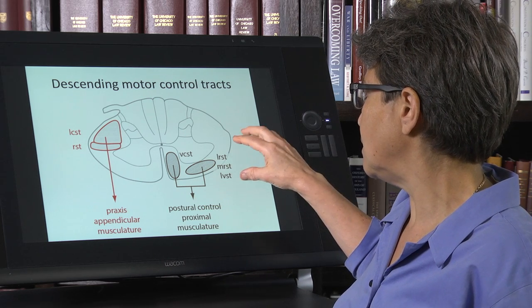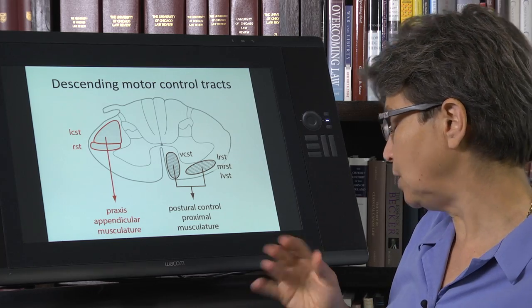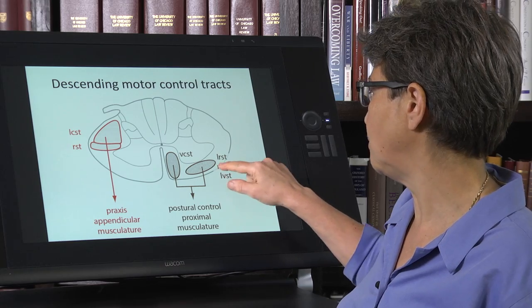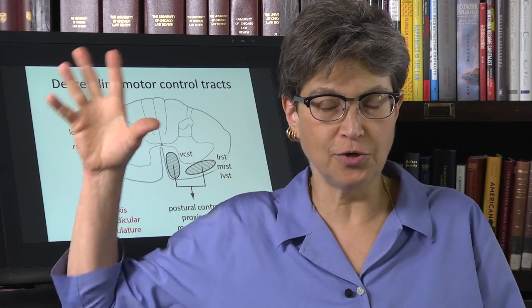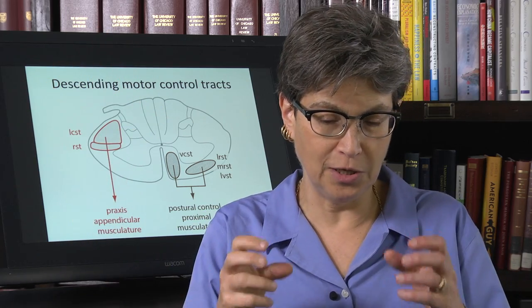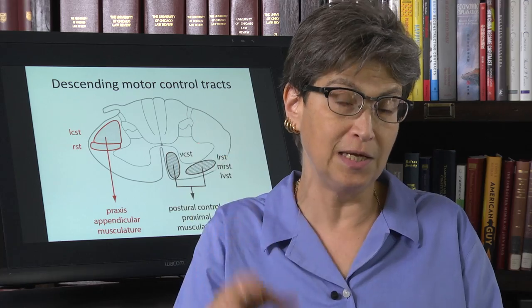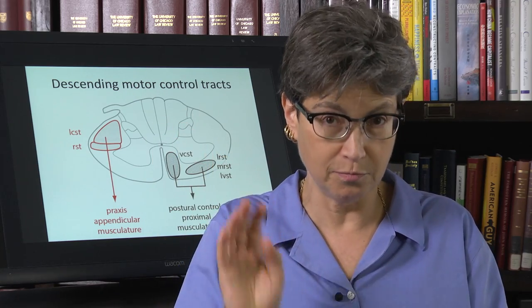The other pathways are the lateral reticulospinal tract, the medial reticulospinal tract, and the lateral vestibulospinal tract. This one, the medial reticulospinal tract, which comes from the pons, depends on input from the forebrain in order to be active. So it's only active when it's getting an input from the forebrain. And the forebrain is normally always saying, be active.